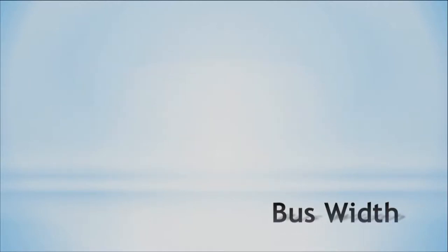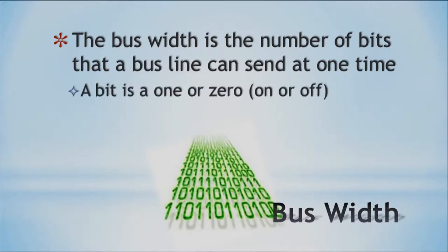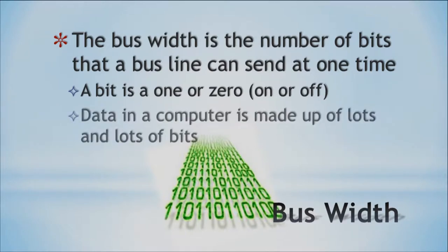So what exactly is a bus line? Well, there's something called bus width. You can think of a big school bus and how wide it is as a way to visualize it, but it's the number of bits that a bus line can send at one time. A bit is a one or a zero — something is on or off, high voltage or low voltage. The data in a computer is made up of lots and lots of bits, and we measure bus width in bits.